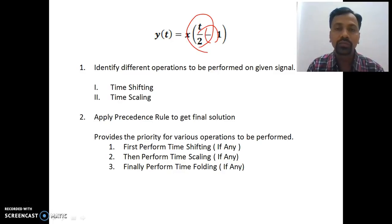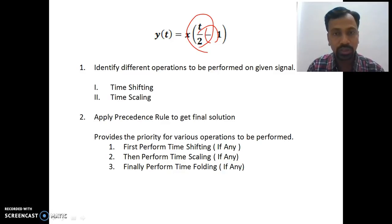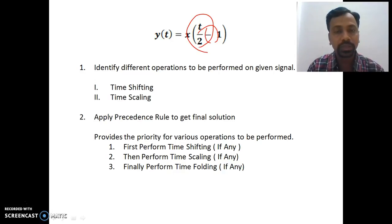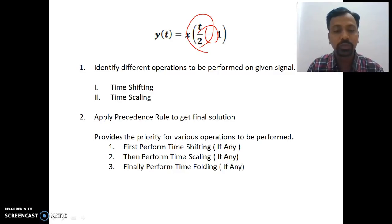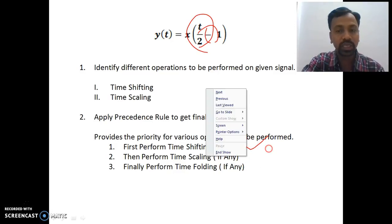If a signal has more than one operation and it consists of a time shifting operation, one should perform the time shifting operation first. Then if it has a time scaling operation, that is performed second. The last operation will be time folding. So the sequence is: first time shifting, then time scaling, and finally time folding.